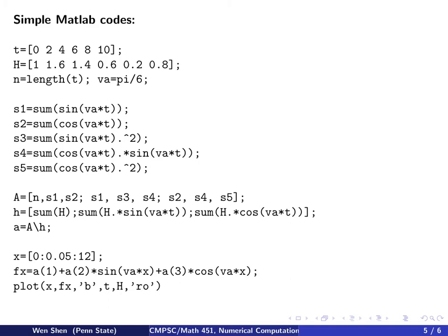And then I know I need to compute all these sums, so in principle, a sum is a for loop, but in MATLAB, this is already programmed, so you can just call the function sum. So you do sine, you send in VA times t, and then this returns a vector, and you send this vector to sum, and it will add all the elements up and return the value in S1.